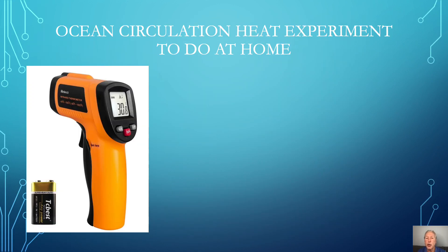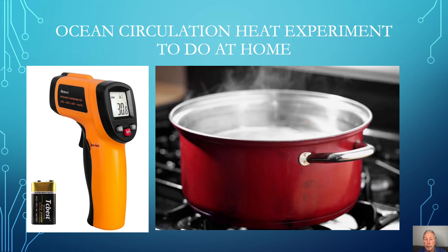To understand how the transport of ocean heat biases temperature statistics, there's a simple experiment you can do at home, easily understood by children. All you need is an infrared temperature gun that costs less than 20 dollars and a pot of heated water. I used a temperature gun to show students in environmental studies classes how surface temperatures dramatically change between open sunlit areas and shaded areas, or between different vegetation types or moist versus dry ground. First, heat up a pot of water, then turn off the heat so no further energy is being added.